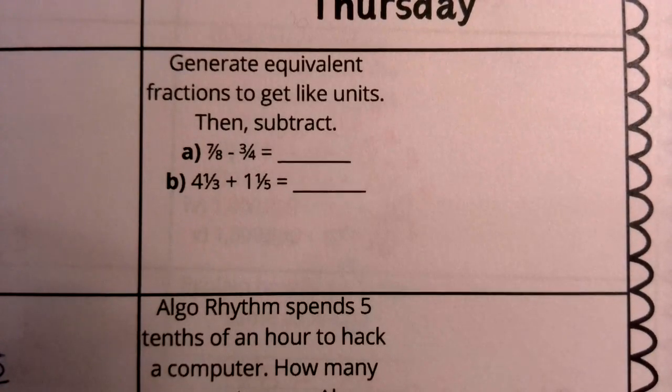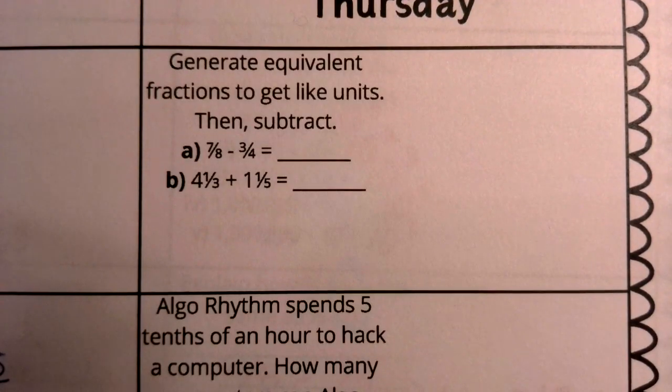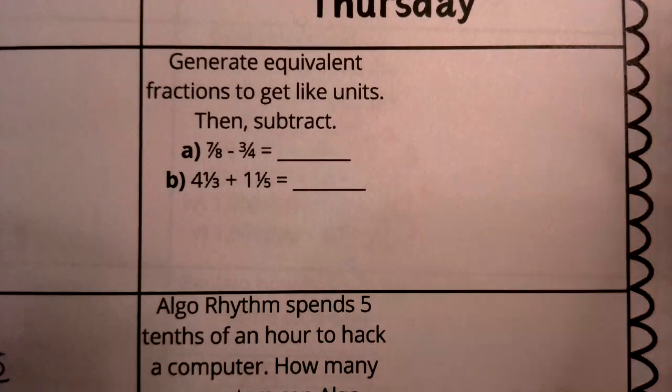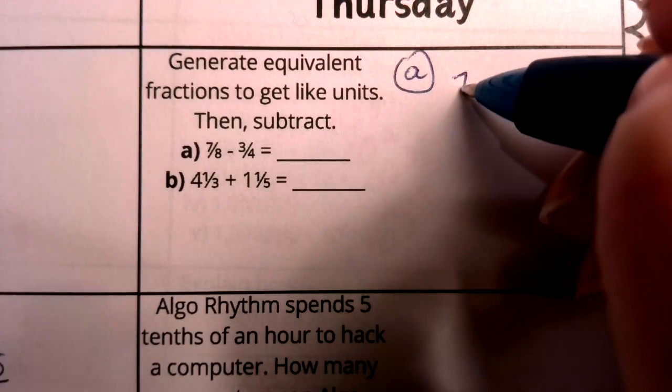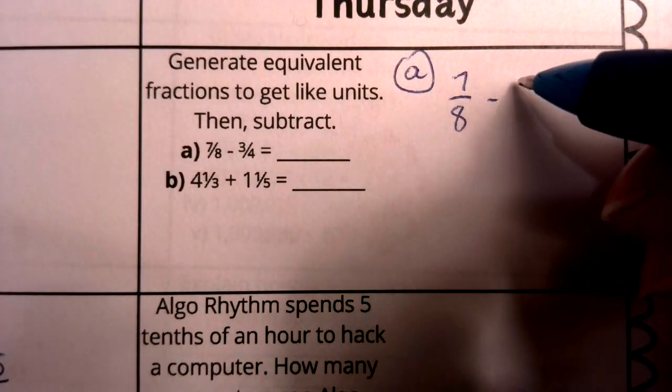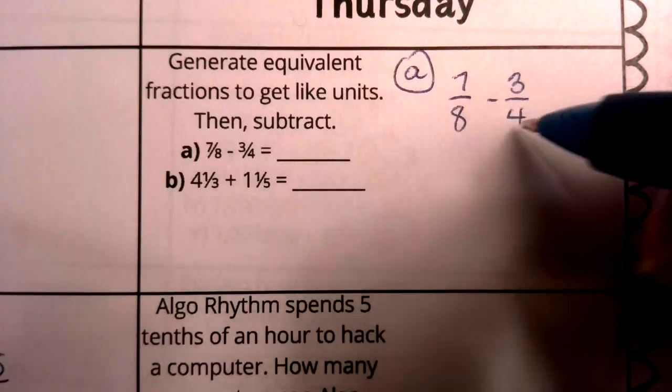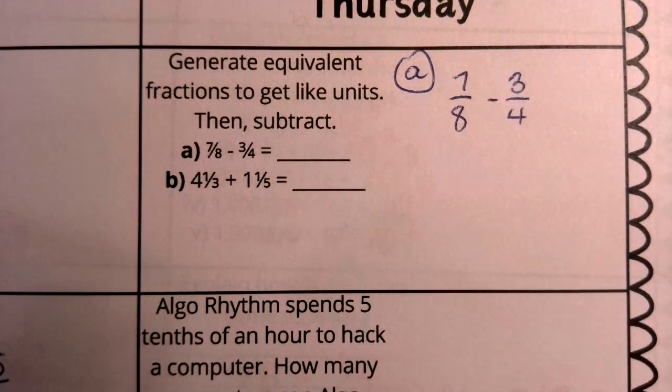We're going to start with some adding fractions, subtracting fractions, and mixed numbers. I still want to really think about the equivalent fractions so that we're getting those like units. Notice in A, we have 7/8 and we want to subtract 3/4. I do not have like units, right? My denominators are not the same.